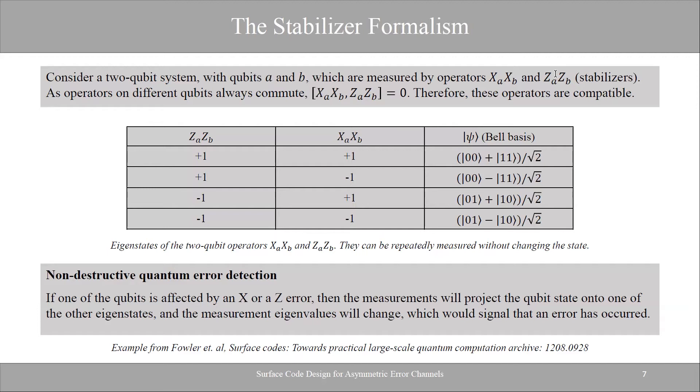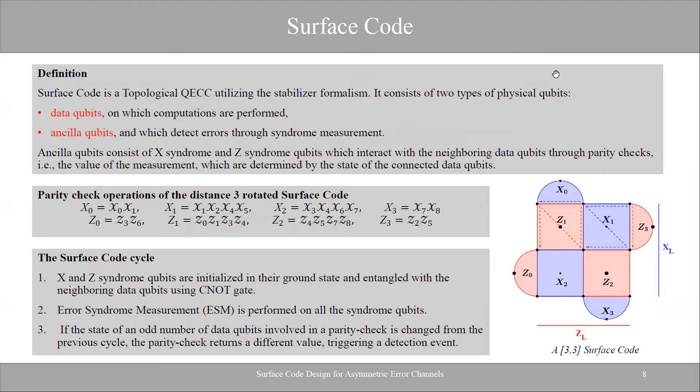Now we can come to surface codes. In general, a surface code is a 2D lattice of qubits which also have something called parity checks — the stabilizers we just talked about. The parity checks are denoted X and Z. Two potentially confusing things: the eigenvalues are tracked as plus one or minus one, where minus one denotes a change in the system and plus one means it stayed the same.